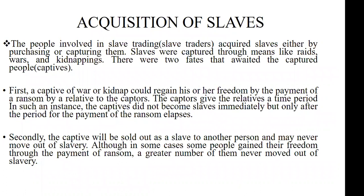How were slaves acquired? The people who were involved in the buying and selling of slaves — how did they acquire these slaves? Slaves were acquired either by purchasing or by capturing them. A person could acquire a slave either by buying the slave or going into the forest to capture them. Most of the time there were groups of people whose business was to go into the interior of the African continent or the African forest to capture slaves and bring them to the coast to be sold to the Europeans.